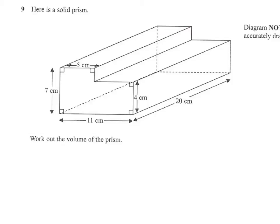We must refer to our formula: if we have a prism, the volume equals the area of the cross section times the length. The cross section is the area at the front. Now, the area at the front, we need to work that out.